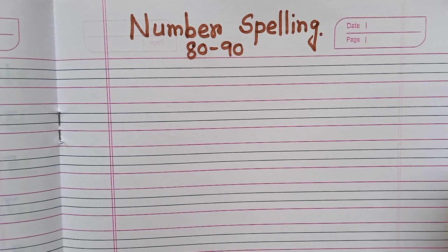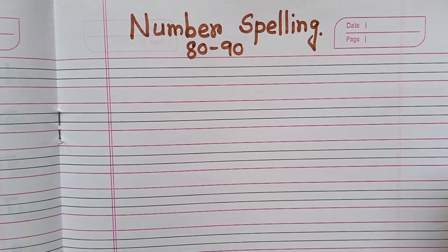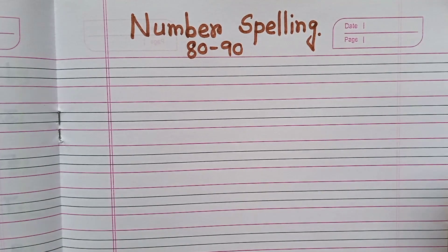Hello Kids! Welcome to our channel Kids World. In this video, we are going to learn and write number spelling from 80 to 90. Let's start!